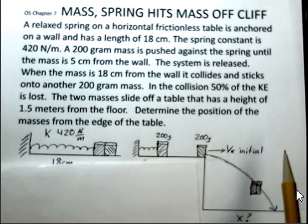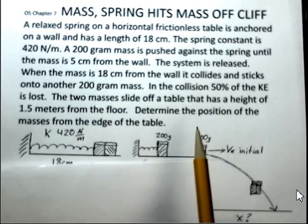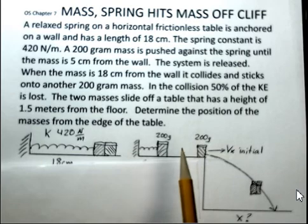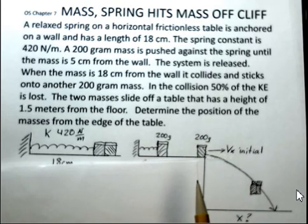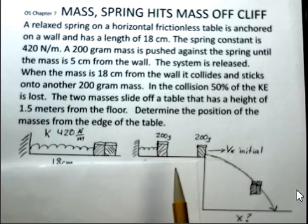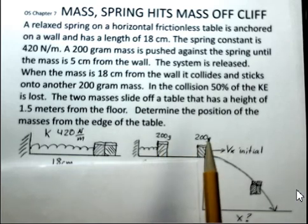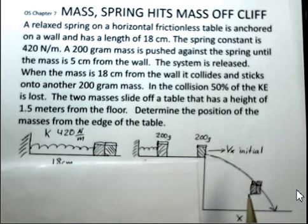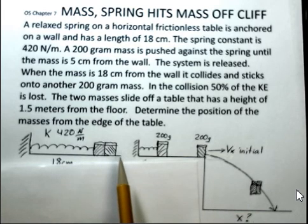So the remaining kinetic energy is going to be 50% of what came in. Then the two masses go off the edge of the table, 1.5 meters off of the floor. And we have the projectile motion of the object. We want to know what distance away from the edge of the table these two objects land. So how would you approach this problem?